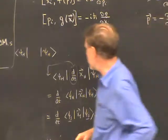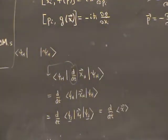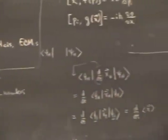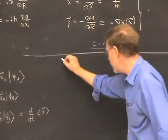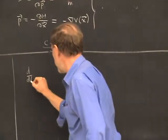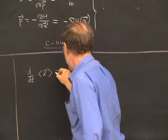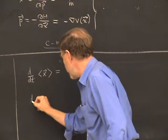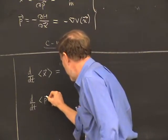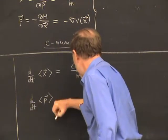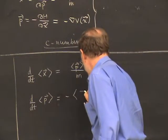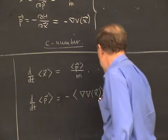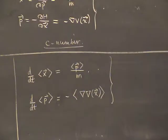Taking the psi_H bra-kets and sandwiching them on both sides of both Heisenberg equations of motion converts them into c-number equations. The first one becomes d/dt of the expectation value of x equals the expectation value of momentum divided by mass. The second one becomes d/dt of the expectation value of momentum equals minus the expectation value of the gradient of the potential as a function of position.